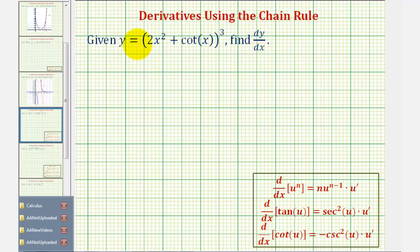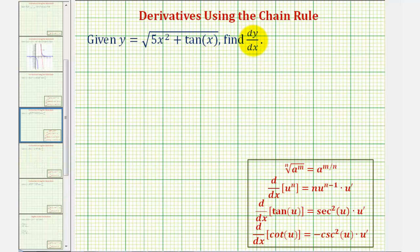We want to find dy/dx given y equals the quantity two x squared plus cotangent x raised to the third power. We'll also find dy/dx given y equals the square root of the quantity five x squared plus tangent x.